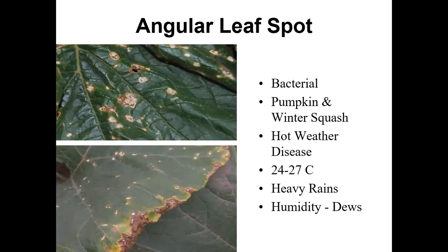Angular leaf spot is a bacterial disease. Pumpkins and winter squash are most susceptible, but it can infect all of the Cucurbit crops. It's a hot, wet weather disease — 24 to 27 degrees C. We typically see it after heavy rainfalls or high humidity, heavy dewfalls interspersed with very windy conditions. The lesions are angular, similar in shape and size to downy mildew lesions, but where downy mildew lesions start water-soaked, become yellow, then become necrotic, they stay angular but intact. With downy mildew, there will be many different stages of progression on that leaf, from newly infected lesions to older sporulating lesions, with the presence of spores.